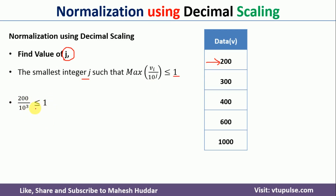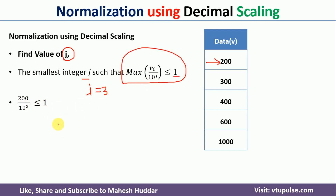Taking j = 3: 200 / 10^3 = 200 / 1000 = 0.2, which is less than or equal to 1. So the minimum value of j in this case is 3. We can also verify with the last data point: 1000 / 10^3 = 1000 / 1000 = 1, which is ≤ 1. So j = 3 works for all data points.